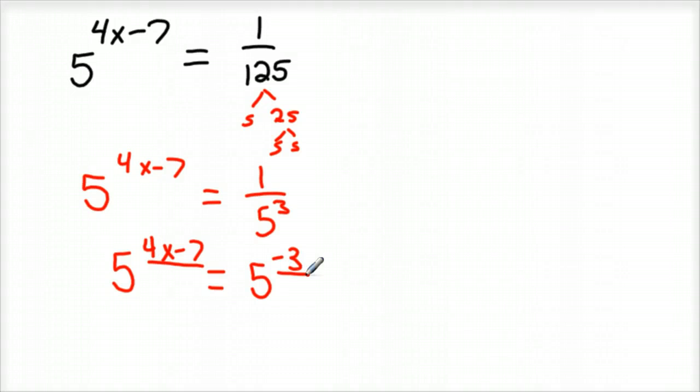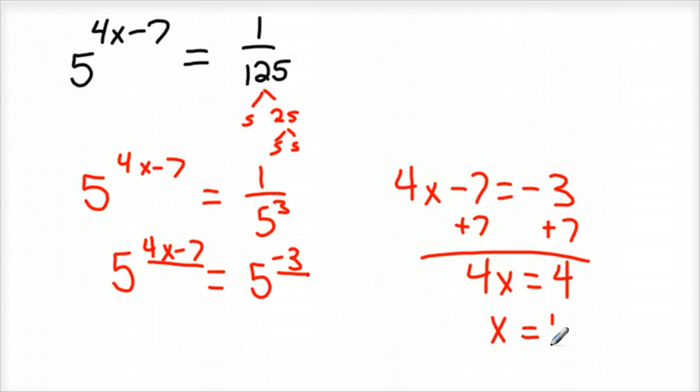And so 4x minus 7 has to be negative 3. Go ahead and solve that. Plus 7, plus 7. 4x equals 4. And so x is equal to 1. I kind of made that up, I'm pretty impressed that it came out even, but that's fine. So x is 1, and you can check that out. See if you get 1/125. So if you go 5 to the 4 minus 7, that would be 5 to the negative 3rd. 5 to the negative 3rd is 1 over 125. And so it checks out. True.